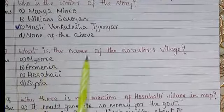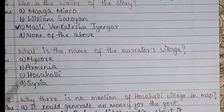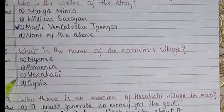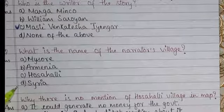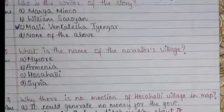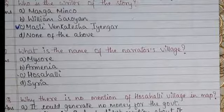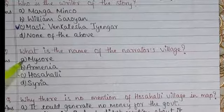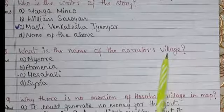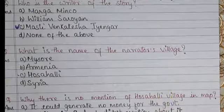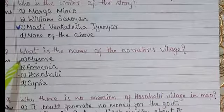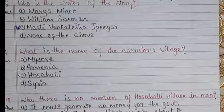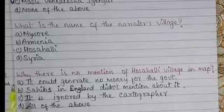Question number two: What is the name of the narrator's village? Option A: Mysur, Option B: Armenia, Option C: Hosahalli, Option D: Syria. Option C, Hosahalli, is correct. Mysuru is not correct because we are talking about a village, and Mysuru is a city.